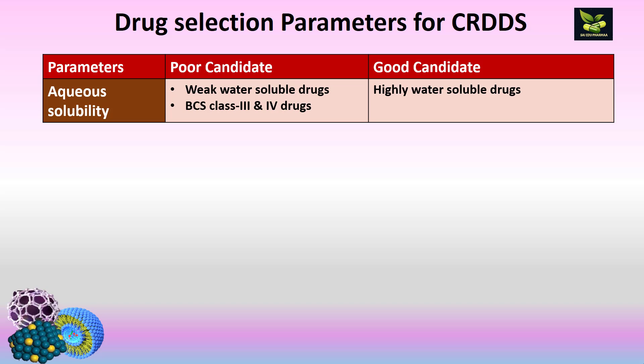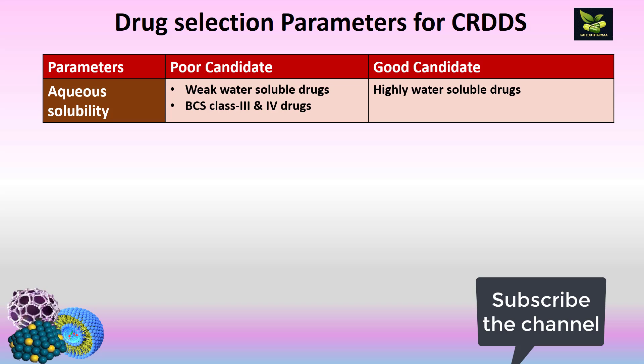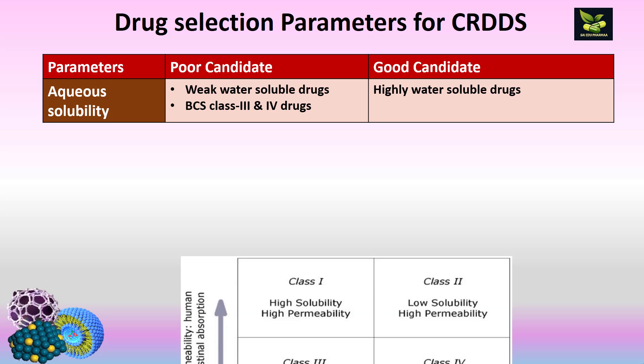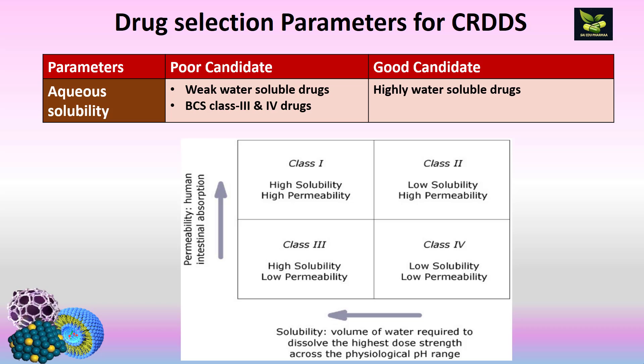The first parameter is aqueous solubility. The drug should be highly water soluble. If any drug is weakly water soluble, it is a poor candidate — especially BCS class 3 and class 4 drugs are poor candidates for controlled release. In BCS classification, class 1 is high solubility and high permeability; class 2 is low solubility and high permeability. Permeability is a very important criterion — if permeability is low, you cannot take that drug as a candidate for controlled release.